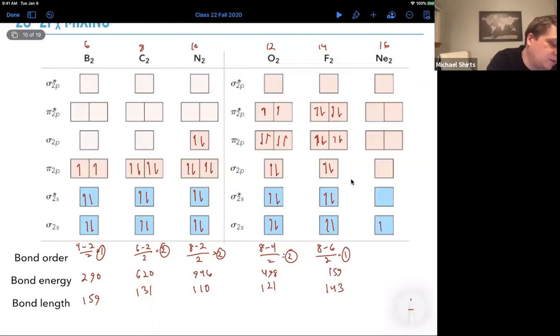Neon, 1, 2, 3, 4, 5, 6, 7, 8, 9, 10, 11, 12, 13, 14, 15, 16. We have 8 electrons in bonding orbitals, 8 in anti-bonding orbitals divided by 2, 0, bond order of 0.